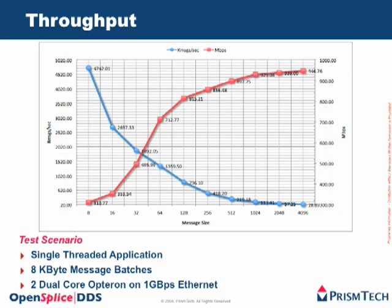In this graph, I'm showing the throughput in terms of thousands of messages per second that OpenSplice can deliver when batching messages into 8K byte messages, running a single-threaded application on a dual-core Opteron, with two machines connected by gigabit ethernet. Starting with 8-byte messages, we are not far from 5 million messages per second, going down to 1.5 million for around 50 bytes, over 1 million for 100 bytes, and down to 418,000 messages per second for 256 bytes.